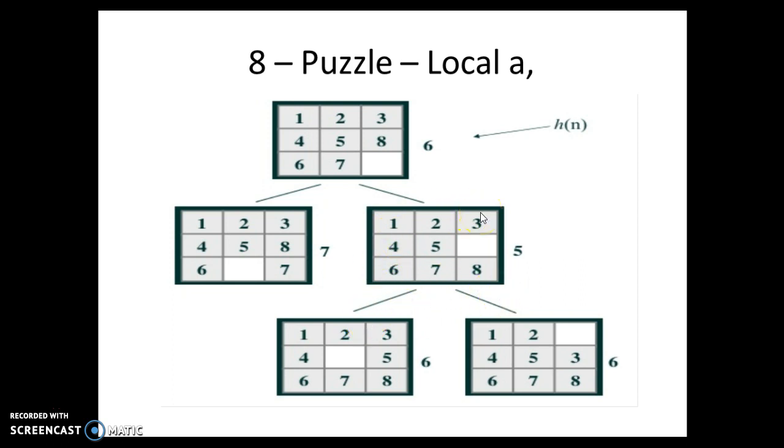And this problem is exactly called as local maxima problem. So this local maxima is a scenario where I am not reaching the goal state, but my algorithm is stuck up somewhere in the middle. It is almost like a stalemate or a dead block scenario here. So there are various variations of my hill climbing algorithm to handle the local maxima problem, which we will be looking at in further videos. Thank you very much.